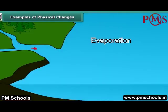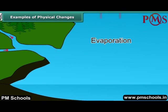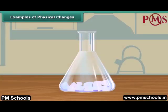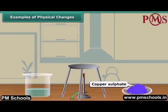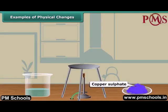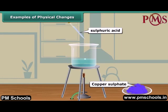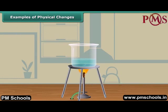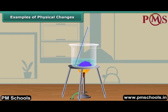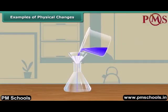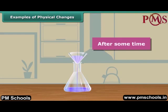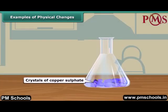Salt can be obtained by the evaporation of seawater, but the salt obtained in this manner is not pure. Pure crystals of salt can be obtained by crystallization. To prepare pure crystals of copper sulfate: take about 100 ml water in a beaker, acidify it with a few drops of dilute sulfuric acid, heat the water, and when it starts boiling, add copper sulfate powder slowly with continuous stirring until a saturated solution is obtained. Filter the solution and allow it to cool. After some time, you will see blue colored shining crystals of copper sulfate in the solution.